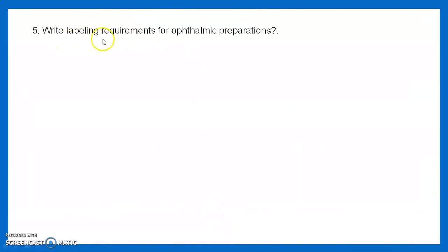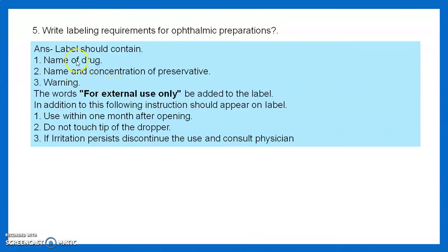Question 5: Write the labeling requirements for ophthalmic preparations. The label should contain the name of the drug, and the name and concentration of the preservative. Warning should include the words 'for external use only.' Additional instructions: use within one month after opening; do not touch the tip of the dropper; if irritation persists, discontinue use and consult the physician.